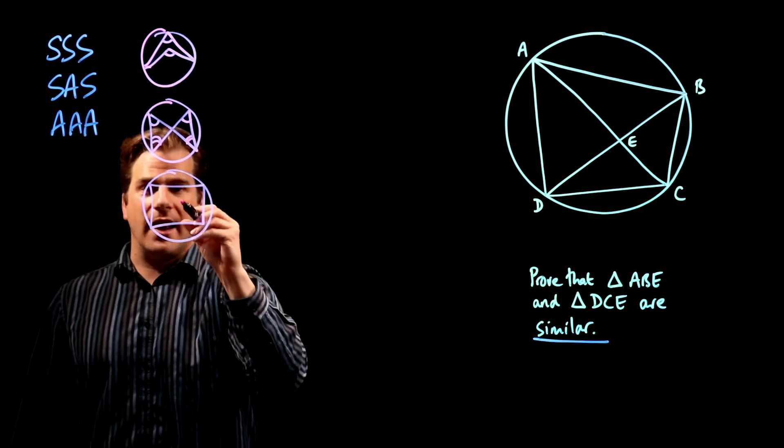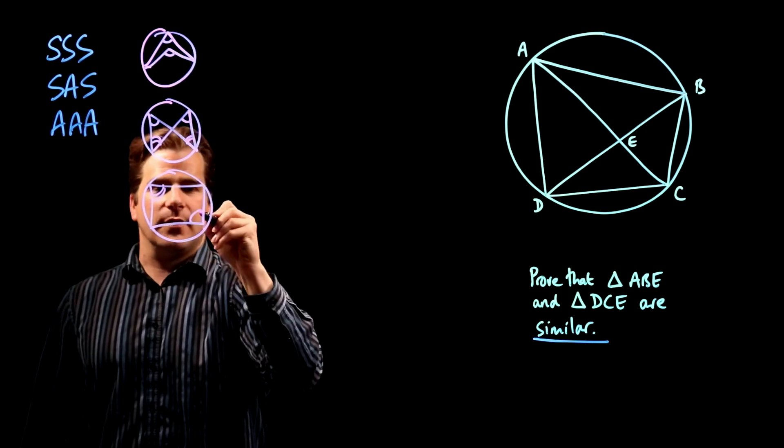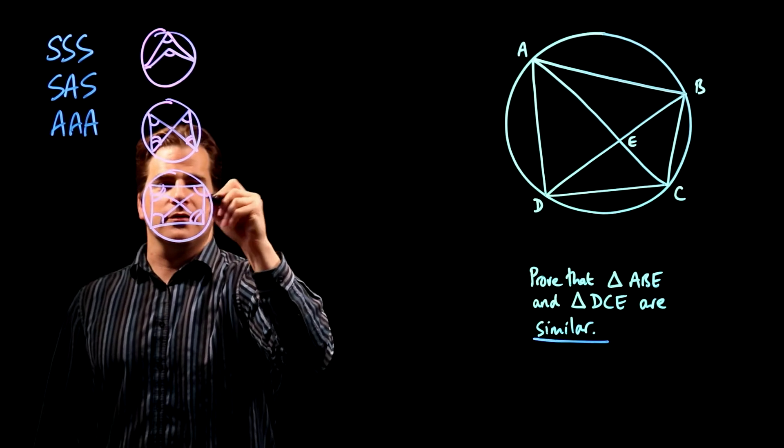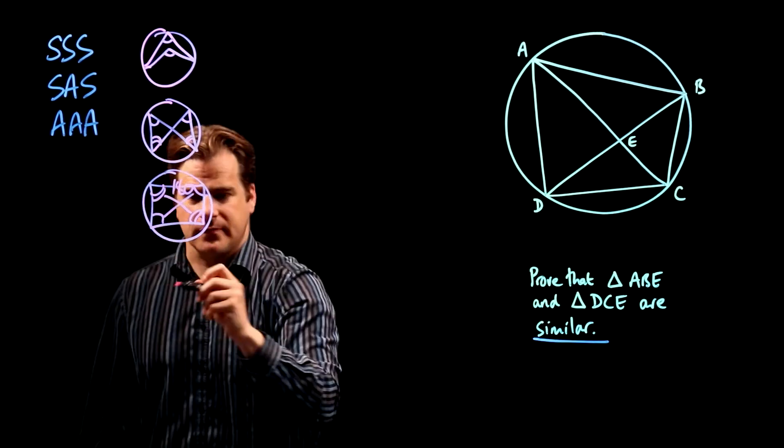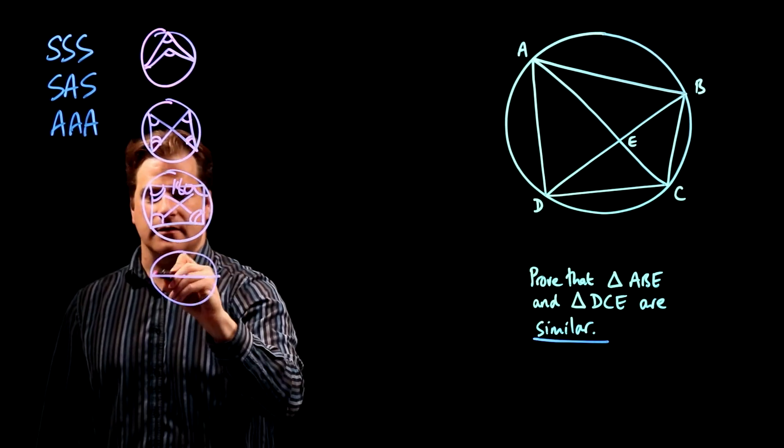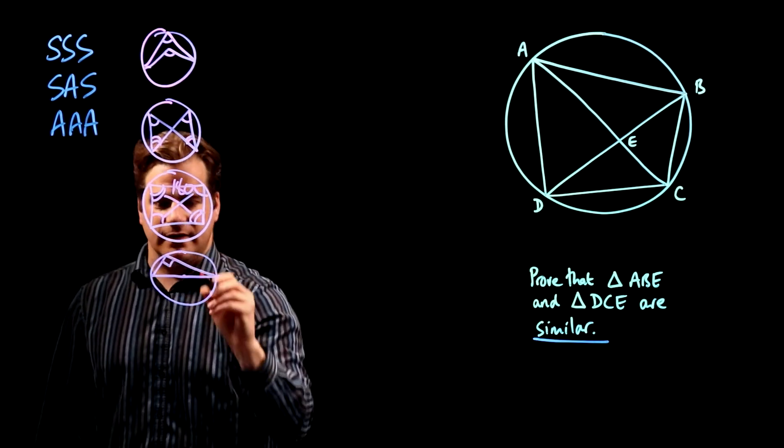Cyclic quadrilateral. These two angles add up to 180. These two angles add up to 180. Semicircle. Central circle, diameter. Those two lines, that's always 90.